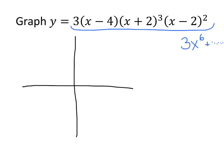When x is a really big positive number, x to the sixth is six positive numbers multiplied together, which is positive. Multiplied by 3, my function is really big and positive. So I'll put a big arrow indicating that when x is big and positive, y is big and positive. When x is near negative infinity, x to the sixth is six negative numbers multiplied together. The negatives cancel in pairs, so the result is still positive. Multiplied by 3, y is again near positive infinity. So on both ends of the graph, the function goes up to positive infinity.